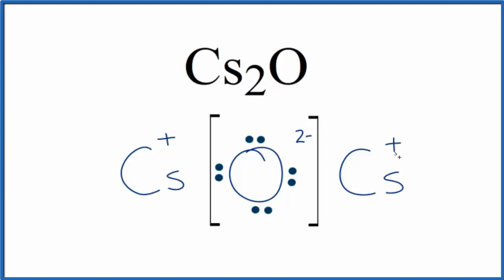So because we have these positive ions and the negative ion, they're attracted together. That forms the ionic bond for Cs₂O. So this is our Lewis structure for Cs₂O.